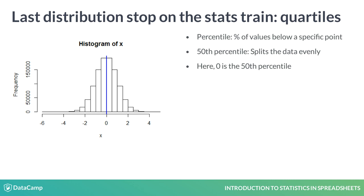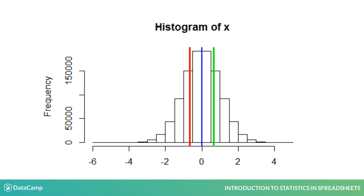Quartiles are percentiles that segment the data into four chunks. The red line at negative 0.67 demonstrates that 25% of the data is less than or to the left of negative 0.67. Another 25% is greater than negative 0.67 but less than the blue average zero line. The next 25% is greater than zero but less than the green line at 0.67. Finally, the remaining 25% of data points are greater than 0.67, to the right of the green line.